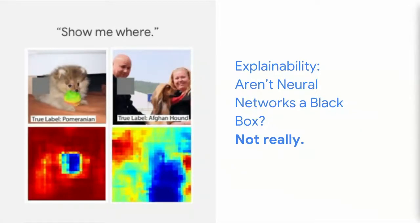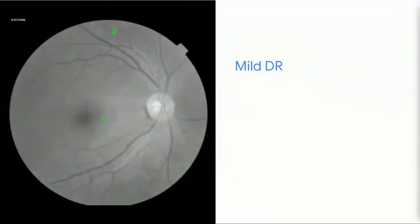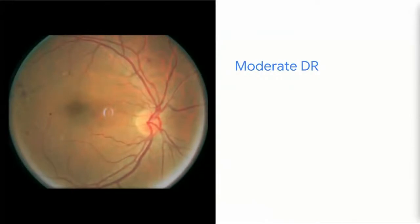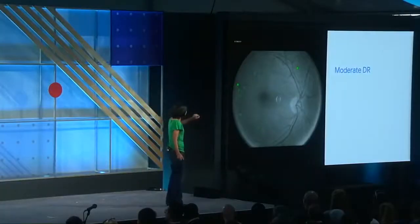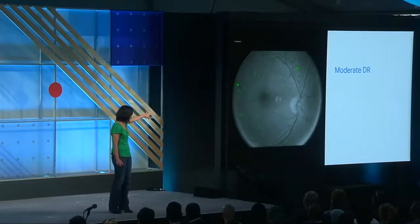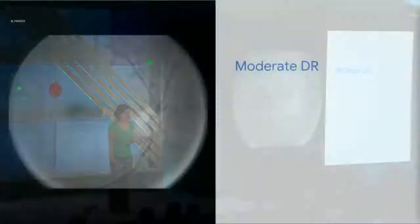On the left you have an Afghan hound, and the network is highlighting the Afghan hound. Using this same technique, we applied it to the fundus images. This is a case of mild disease — it looks completely normal to me, but a highly trained doctor can pick out little microaneurysms where the green spots are. Here's a picture of moderate disease — a little worse because you can see some bleeding. The heat map picks up the bleeding. There are two artifacts in this image — a dust spot and a little reflection — and you can tell the model just ignores them.